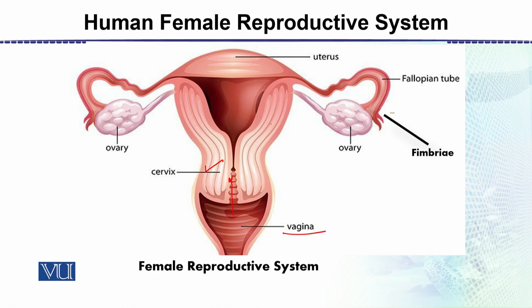The uterus has very thick membranes including the Myometrium and the Endometrium. The cavity of the uterus is where the development of the child occurs.